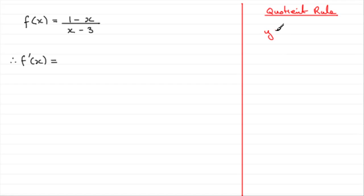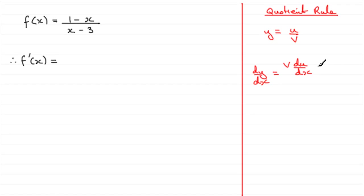Basically, if you've got y equals two functions of x being divided by one another — u over v — then it can be shown that dy by dx is equal to the bottom of the fraction, v, times the differential of the top, du/dx, minus the top of the fraction, u, times the differential of the bottom of the fraction, dv/dx, all divided by the bottom of the fraction squared.